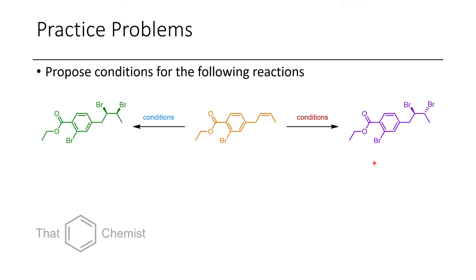Before we get into that, let's go through the practice problems from last lecture. In this first problem, we have an alkene, and under two different sets of conditions we get, in one case, the 1,2-syn dibromide, and in the other case the 1,2-anti dibromide. If you had drawn this in the linear form it would end up being anti — it just depends on how you draw it, so it's important to keep the molecule in the same configuration to understand why we're getting different products.